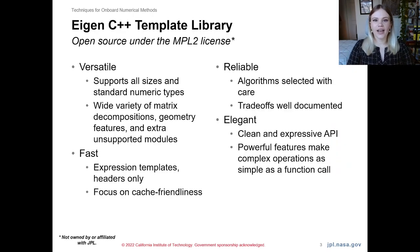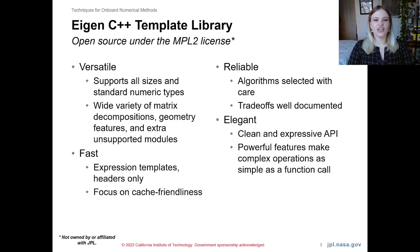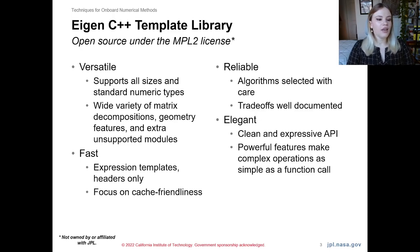Now let's talk about Eigen. Eigen is an open source template library available under the MPL2 license, and it's used often in industry. It's used in Google's TensorFlow library, which you'd be familiar with if you like machine learning or AI. It's also used in the KDE package of open source software, popular among Linux users, and in smaller projects such as the Robot Operating System, Celestia, and the painting program Krita. If you go on Eigen's website, it likes to tell you that it is versatile, fast, reliable, and elegant.